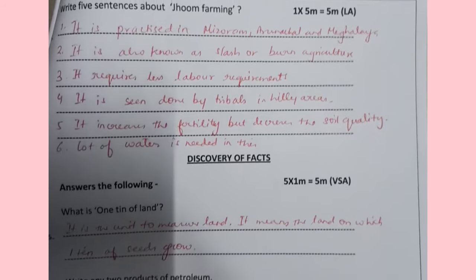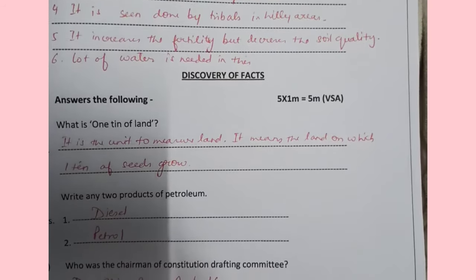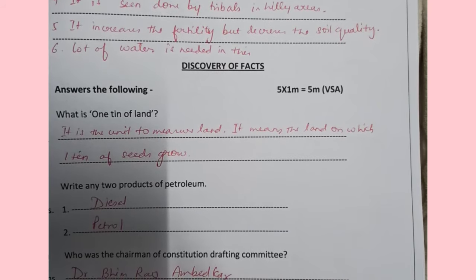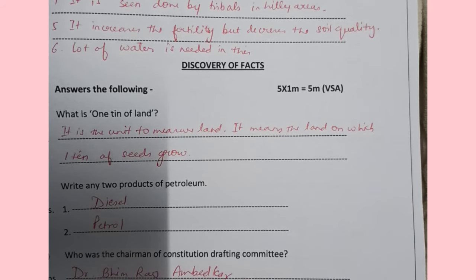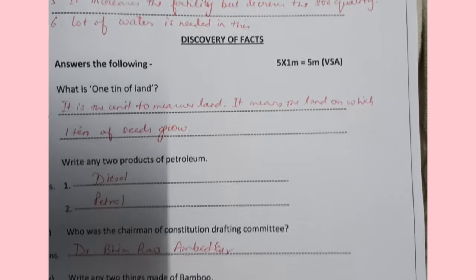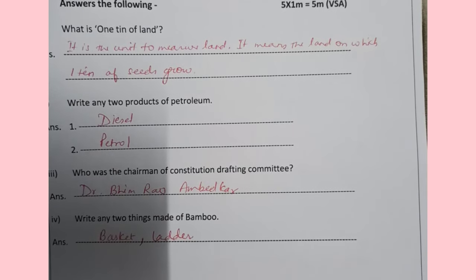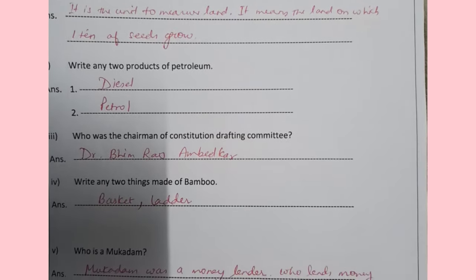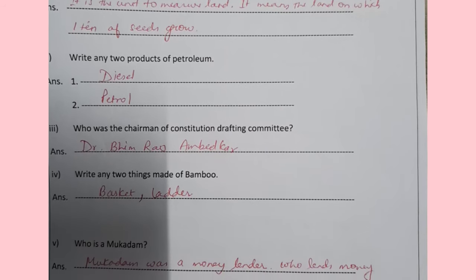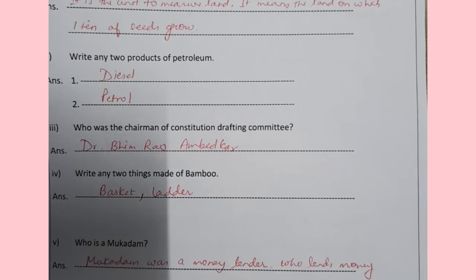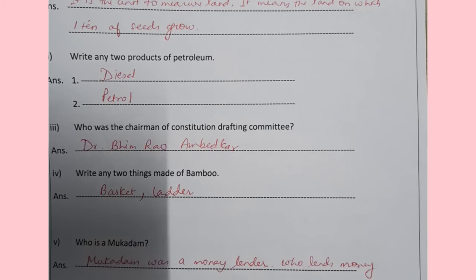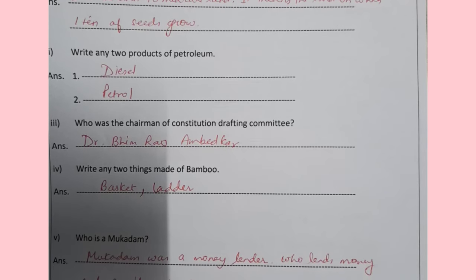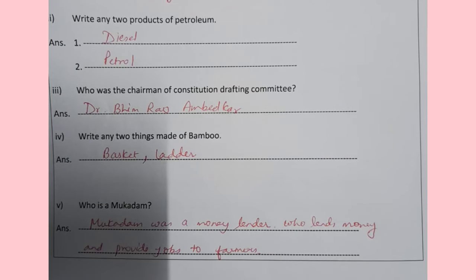Coming to the Discovery section. What is one tin of land? It is a unit to measure land — basically it means the land on which one tin of seeds can grow. Write any two products of petroleum: diesel and petrol. Who was the chairman of the Constitution's Drafting Committee? Dr. Bhim Rao Ambedkar. Write any two things made of bamboo: basket and ladder. Who is a Mukaddam? A Mukaddam was a money lender who lent money and provided jobs to farmers.